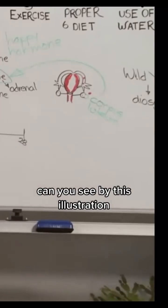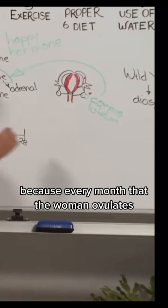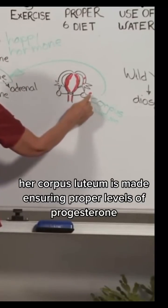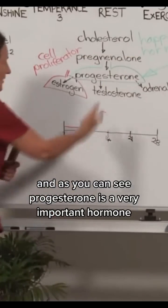Can you see by this illustration how important it is for a woman to ovulate every month? Because every month that the woman ovulates, her corpus luteum is made, ensuring proper levels of progesterone.